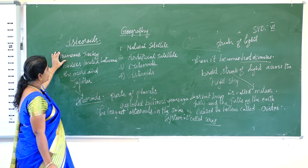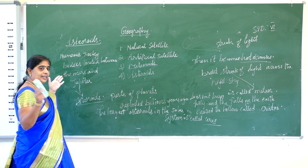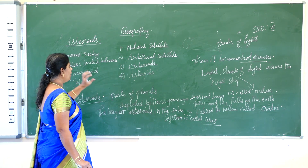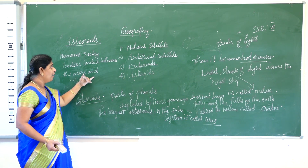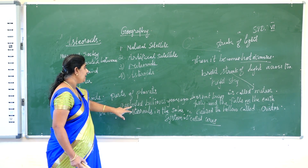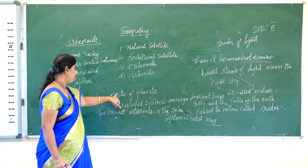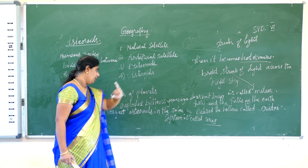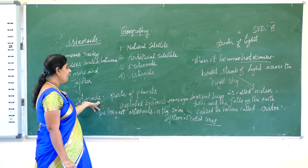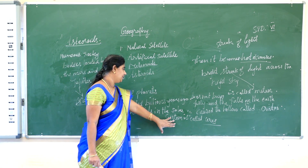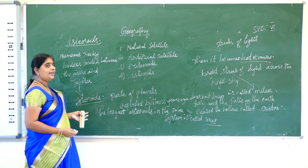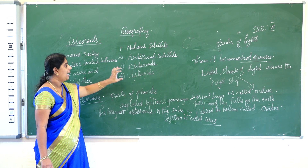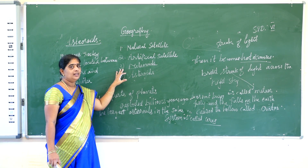Asteroids are numerous rocky bodies located between the planets Mars and Jupiter. According to scientists, they are parts of planets that exploded billions of years ago. The largest asteroid in the solar system is called Ceres. This is about today's lesson. You have seen natural satellites, artificial satellites, meteoroids, and asteroids. I hope you understood the lesson. Thank you, children.